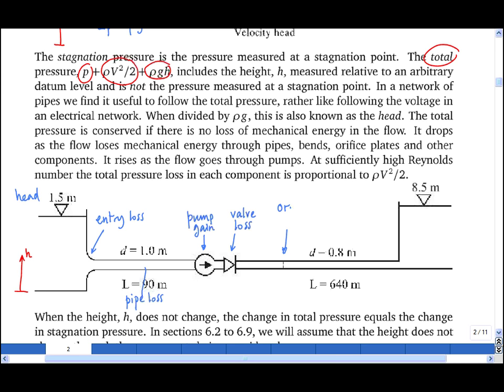There will be a drop in total pressure across the orifice. There will be another pipe loss. And then there will be an exit loss as the flow exits the pipe into another reservoir. And let's say that because of the pump, I've ended up with a higher head than I started with, i.e. a higher total pressure than I started with.